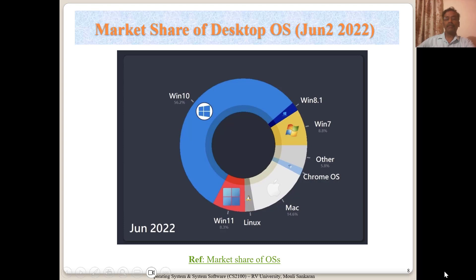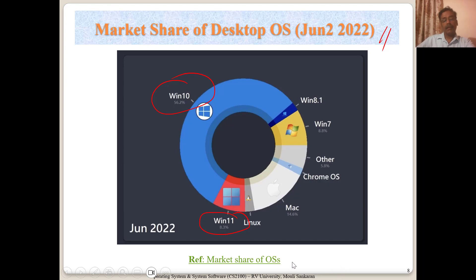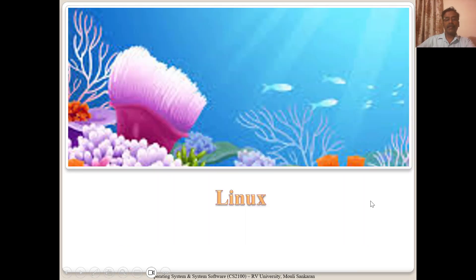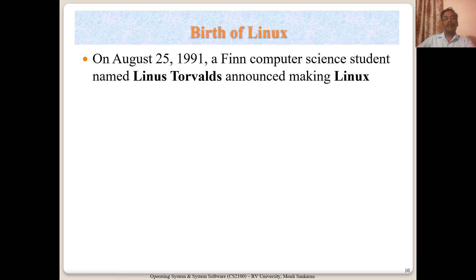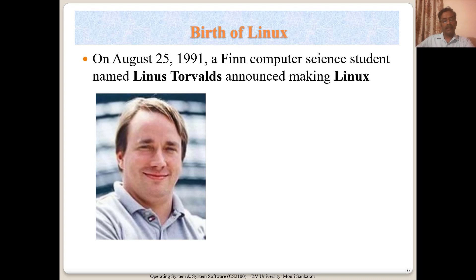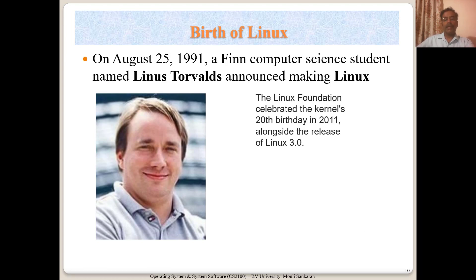Looking at the market share of operating systems as of 2022: Windows still rules with 56% of users. Then comes Windows 11, the next version, at around 8%, and Linux and Mac are also in the market. Older versions of Windows are still being used on older machines. Linux is another important OS which we will use in this course. It was born in 1991, and Linus Torvalds is the person behind it, who started writing the initial versions and features. Many people joined him and Linux grew into a phenomenon that rules the world now.